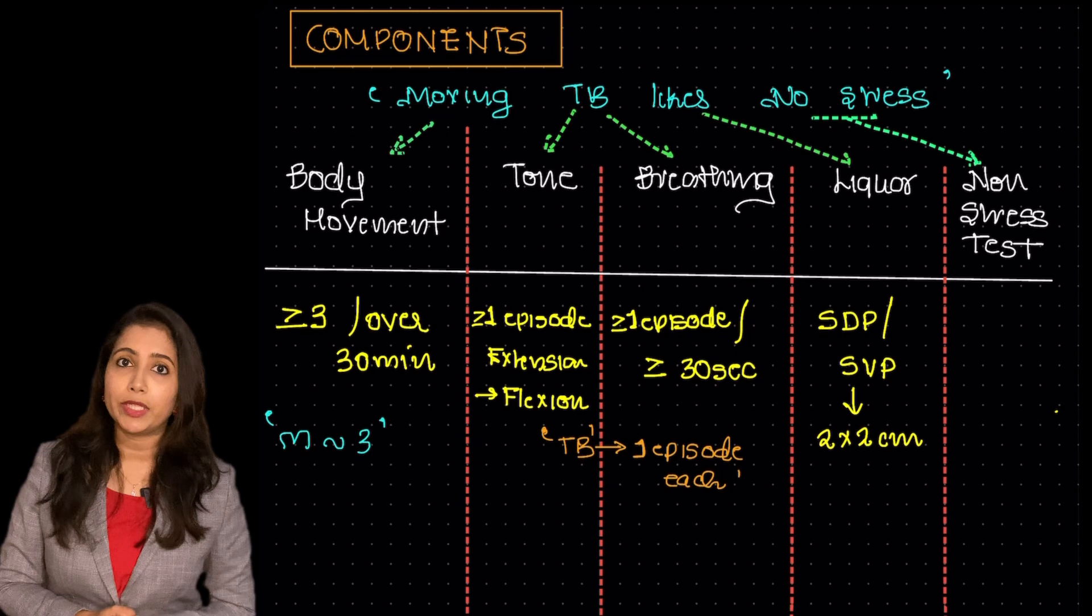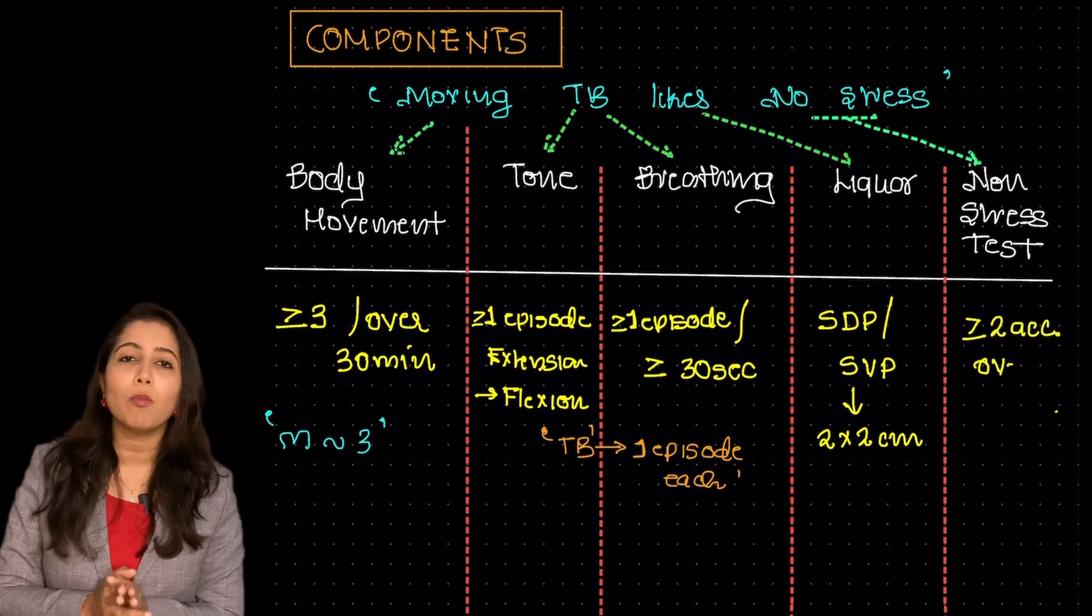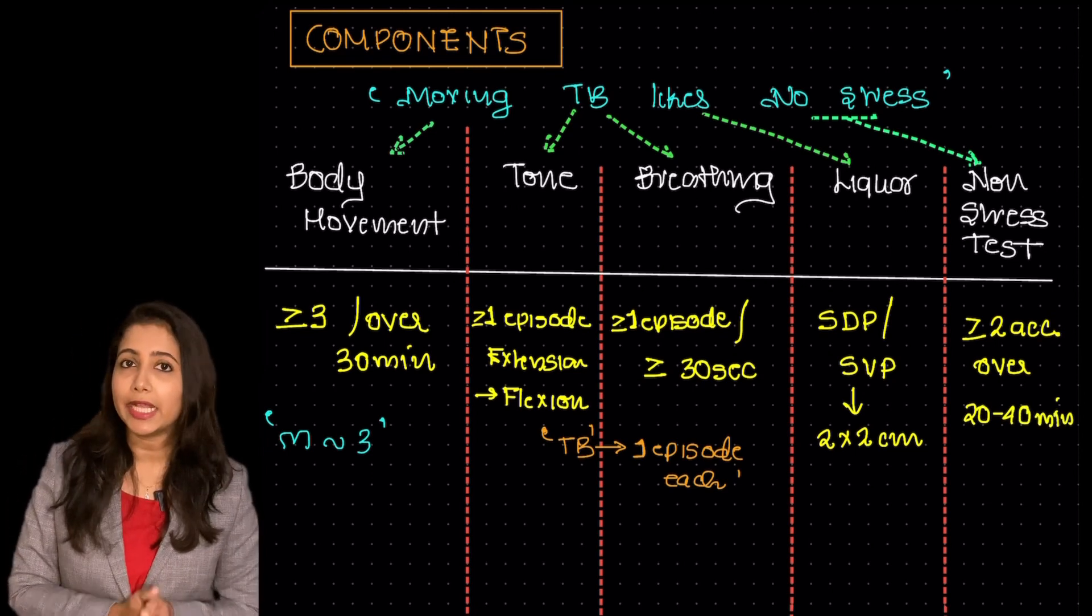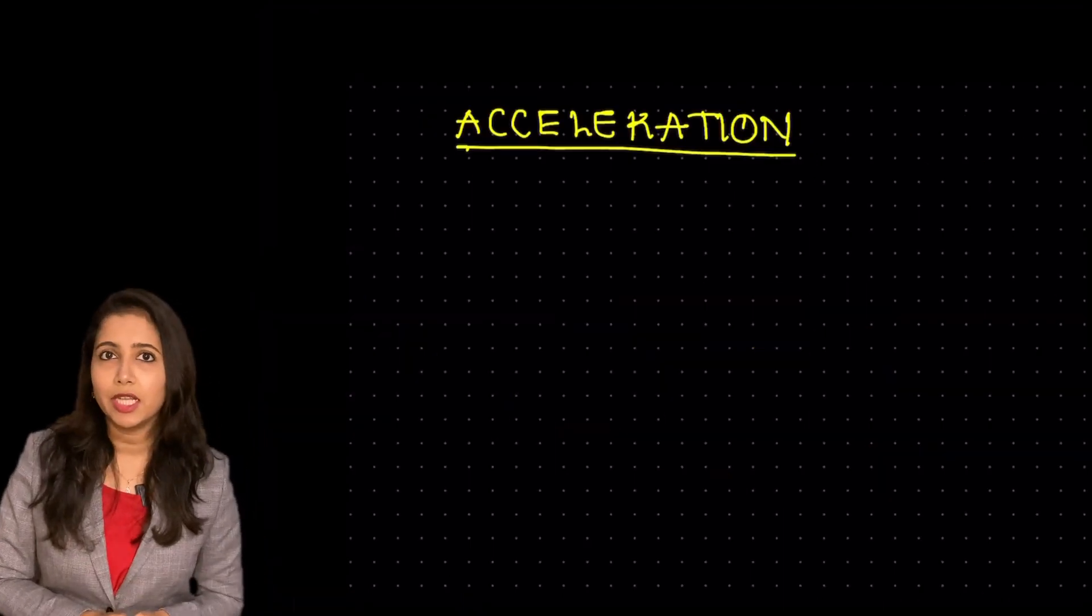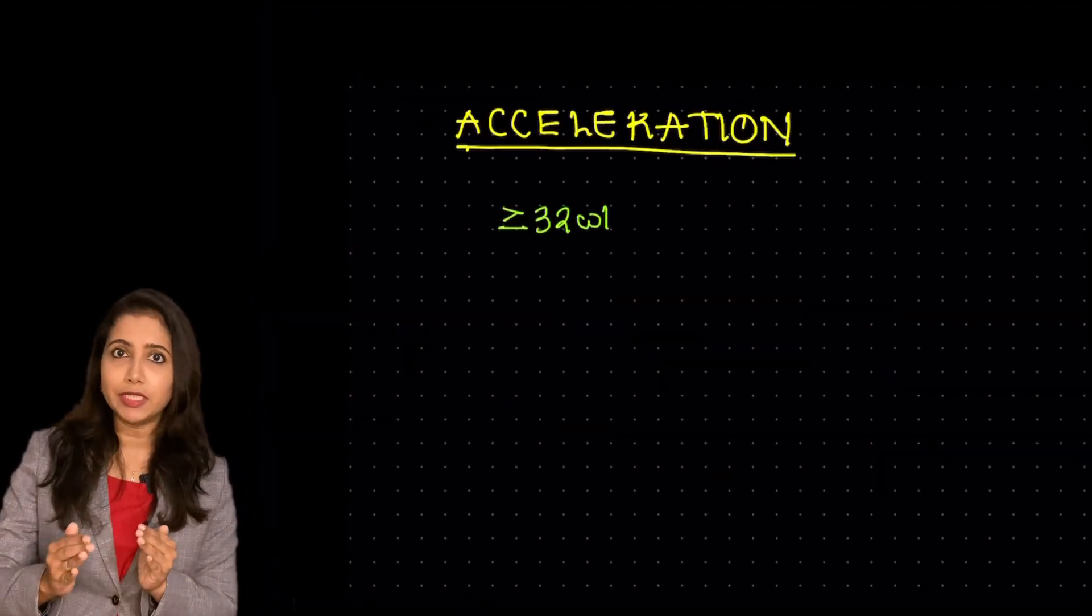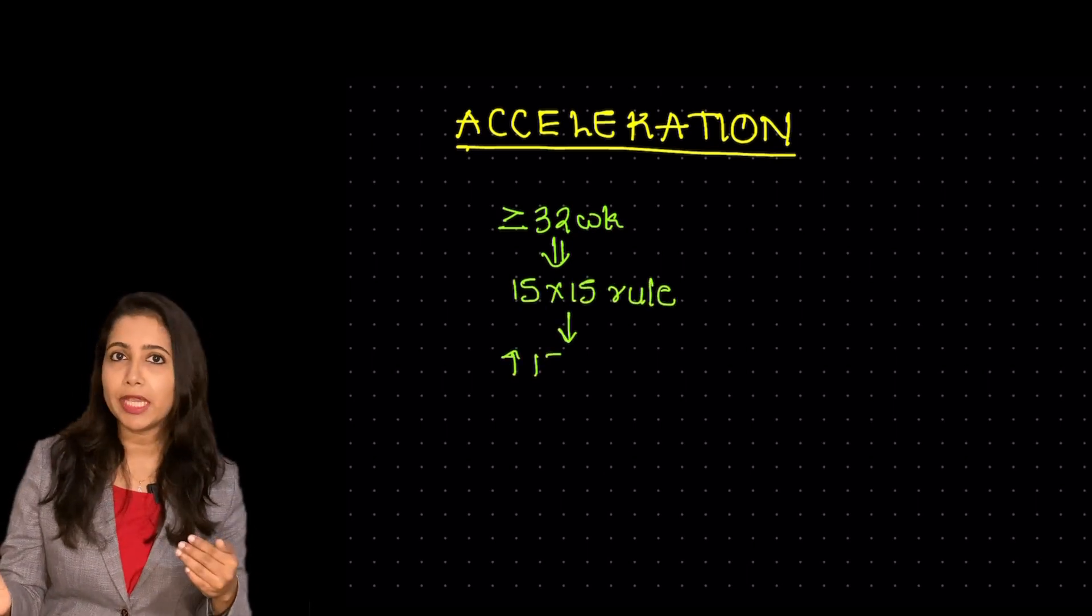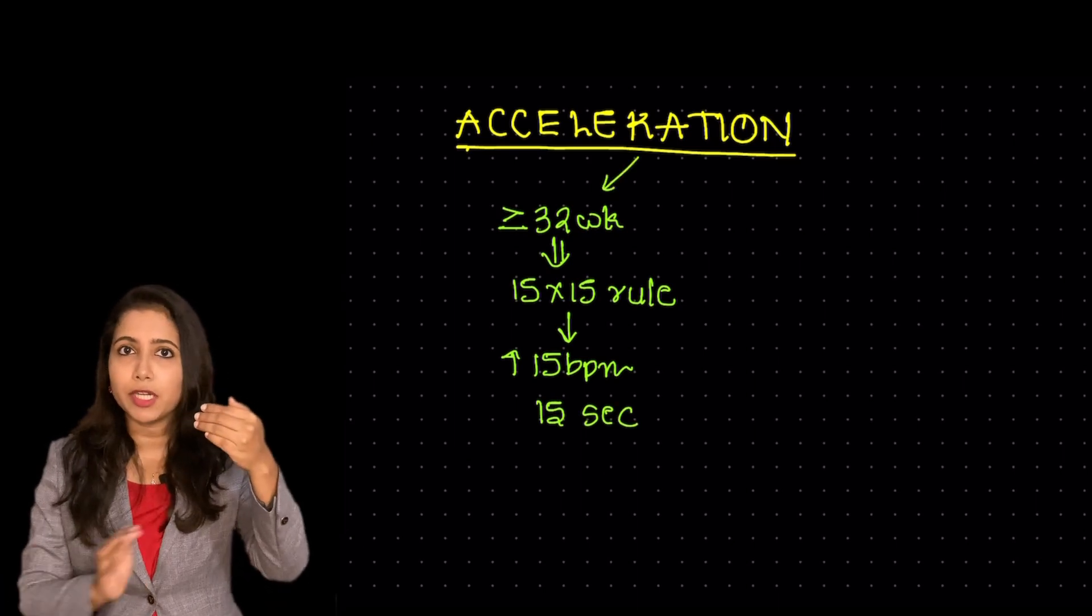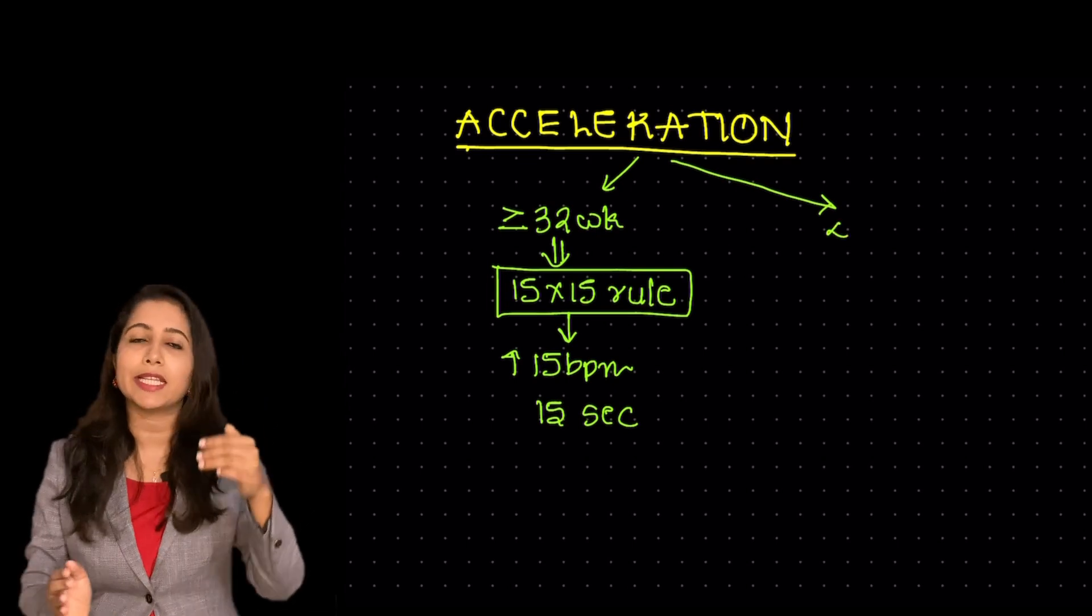Coming to the last one that is non-stress test, there should be at least 2 or more accelerations over a period of 20 to 40 minutes. So what is an acceleration? If the fetus is more than or equal to 32 weeks, there has to be an increase in fetal heart rate of 15 beats over a period of 15 seconds. More than or equal to 32, 15 beats, 15 seconds.